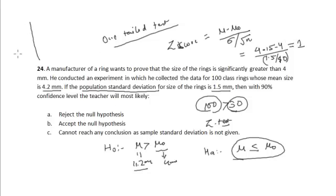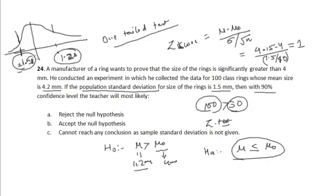Since it is a one-tailed test, the critical value of Z or the Z score corresponding to 90% confidence level is equal to 1.28. The Z critical value is equal to 1.28.